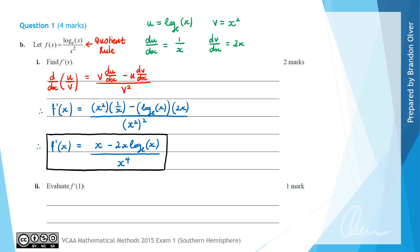Part 2 is just to substitute x equals 1 into the derivative we just found. So therefore, f'(1) is simply equal to 1 minus, and 2 lots of 1 is just 1, and then we have log_e(1).